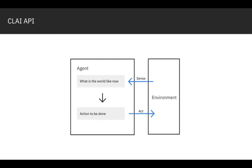The Clay API converts the command line into the classic AI agent architecture, where the bash terminal is the environment that the agent must now interact with.